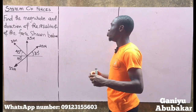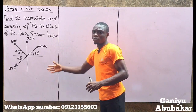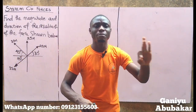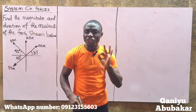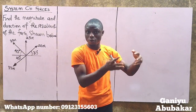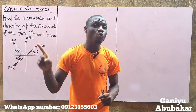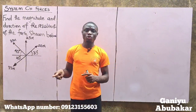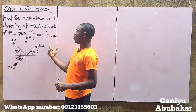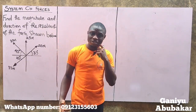The question says: find the magnitude and direction of the resultant of the forces shown below. Let's understand the concept — magnitude is simply a numeric value, a number, either whole or decimal. Direction is simply an angle. This is a concurrent coplanar force system, so I'll find the magnitude and direction of the resultant.